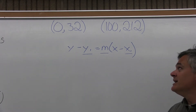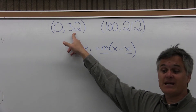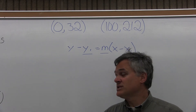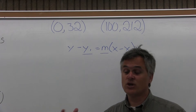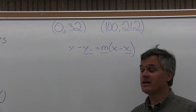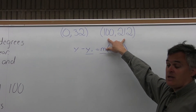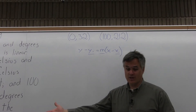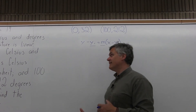I put the Celsius measure in the x position and the Fahrenheit measure in the y position. The reason is it's just the way it's given in the problem — the problem mentions the Celsius temperature first, so I put it first, and Fahrenheit second. As long as you do it consistently, you could do it either way and get the same final answer. I could have made it 32 comma 0 and 212 comma 100, and the final answer for 68 degrees Fahrenheit would come out the same.